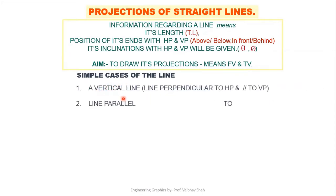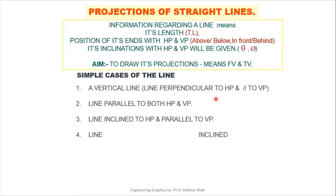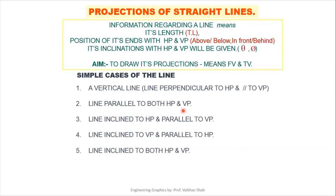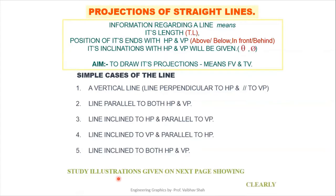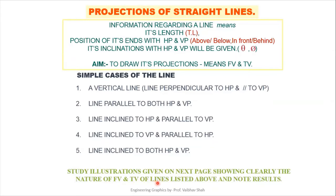Case 1: a vertical line — line perpendicular to HP and parallel to VP. Case 2: line parallel to both HP and VP. Case 3: line inclined to HP and parallel to VP. Case 4: line inclined to VP and parallel to HP. Case 5: line inclined to both HP and VP. Now let us study the illustrations showing the nature of front view and top view for each case and note the results.